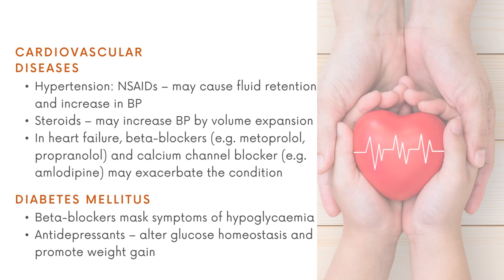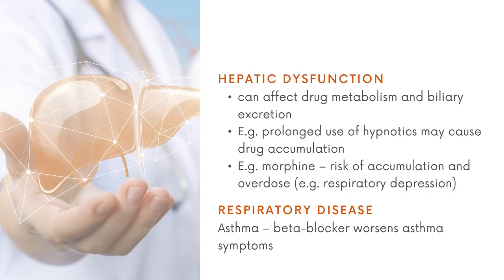Fourth is diabetes mellitus, in which beta blocker use may mask the symptoms of hypoglycemia, making it dangerous for some patients. Antidepressants might alter glucose homeostasis and promote weight gain, so consider choosing antidepressants without this effect. Hepatic dysfunction affects drug metabolism and biliary excretion; prolonged use of hypnotics may cause accumulation, and morphine also carries a risk of accumulation and overdose. For respiratory disease, beta blockers might worsen asthma conditions.